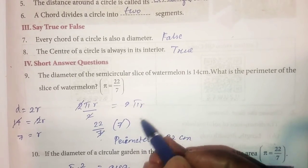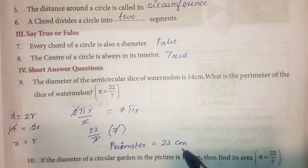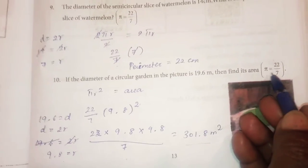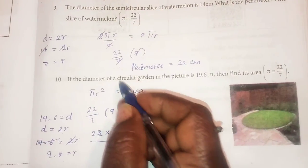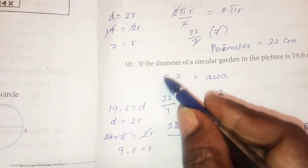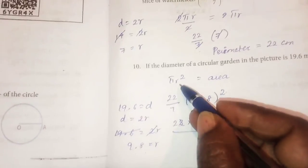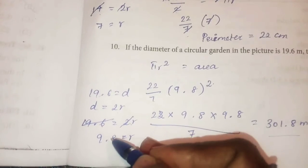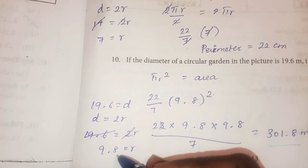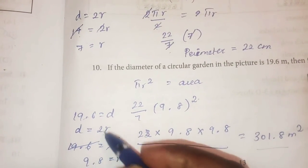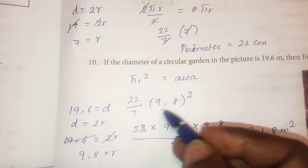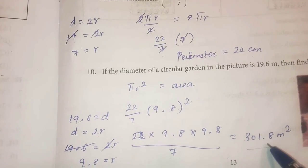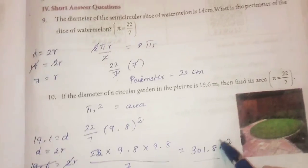Tenth question: If the diameter of a circular garden is 19.6 meters, find its area. Pi value is 22 by 7. Formula: Area equals pi r squared. The diameter is 19.6 m, so radius r equals 19.6 divided by 2, which equals 9.8 m. Area equals 22 by 7 into 9.8 squared, which gives 301.84 square meters.